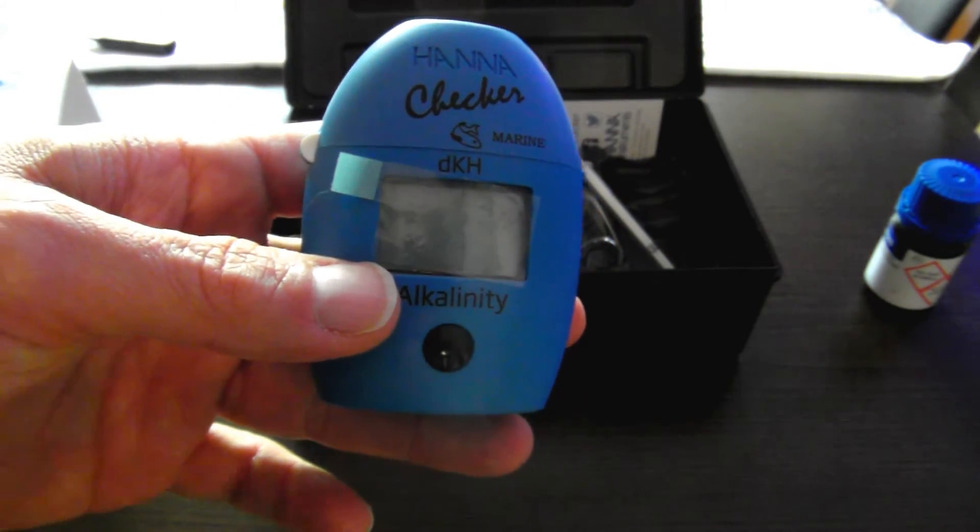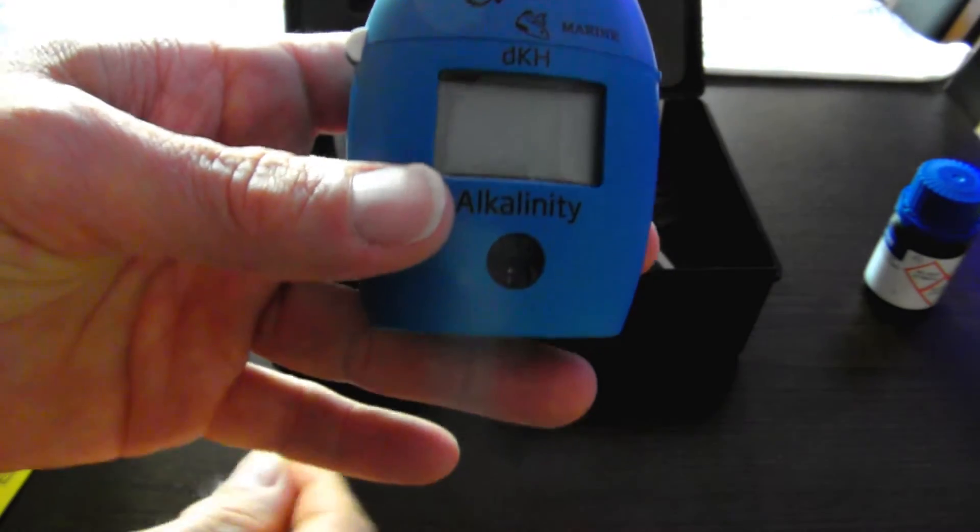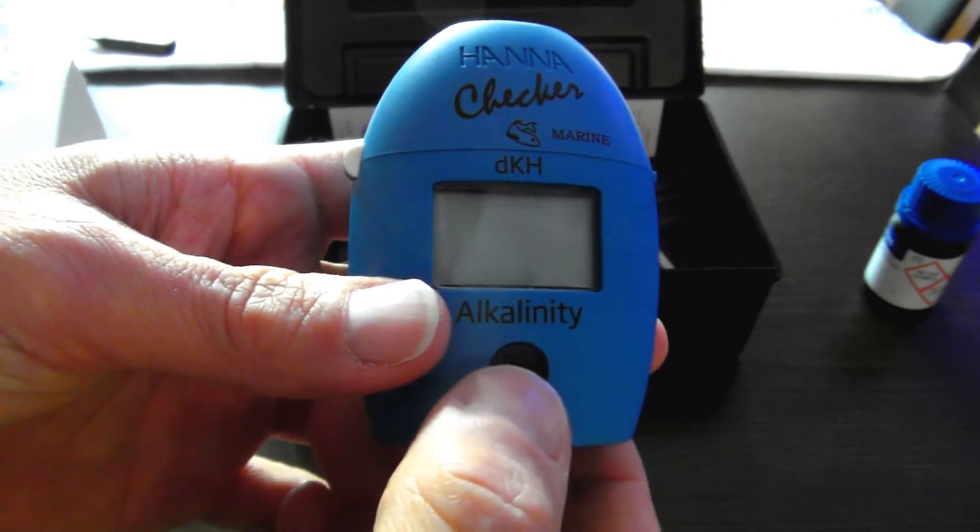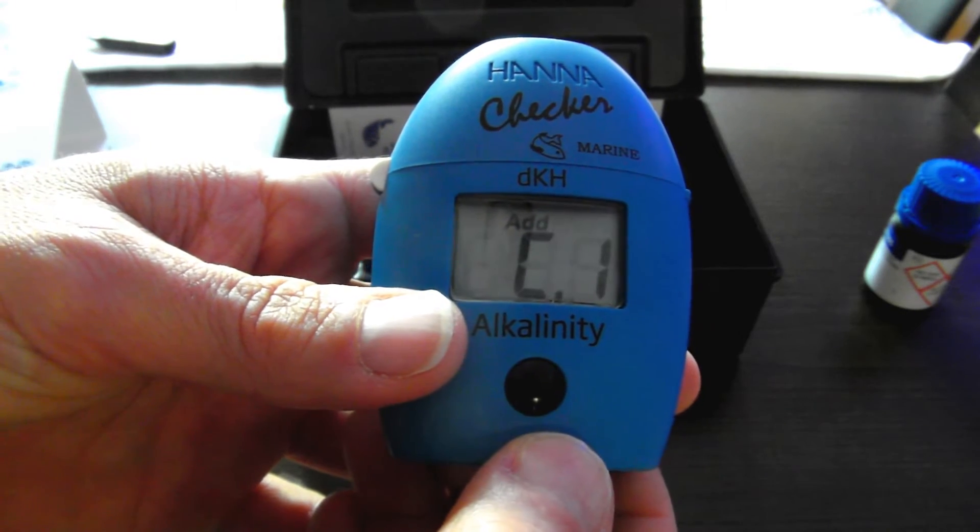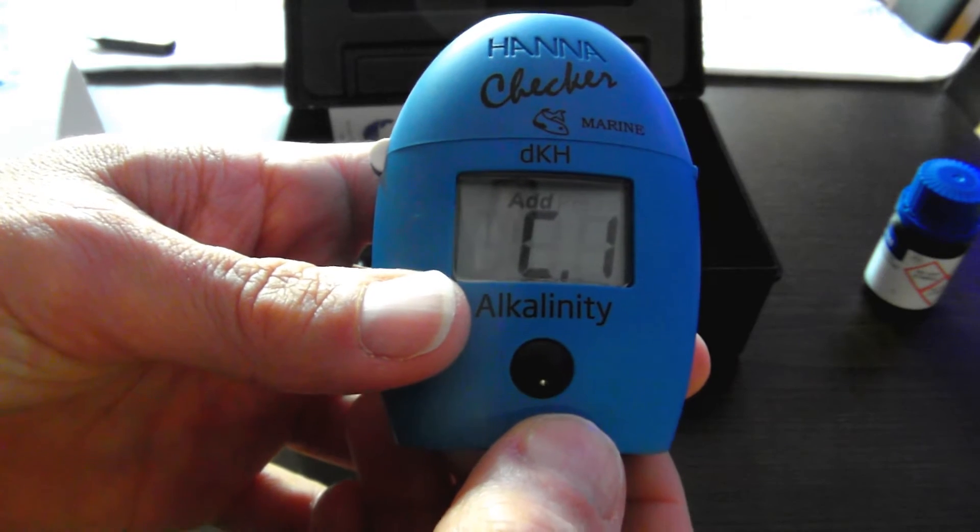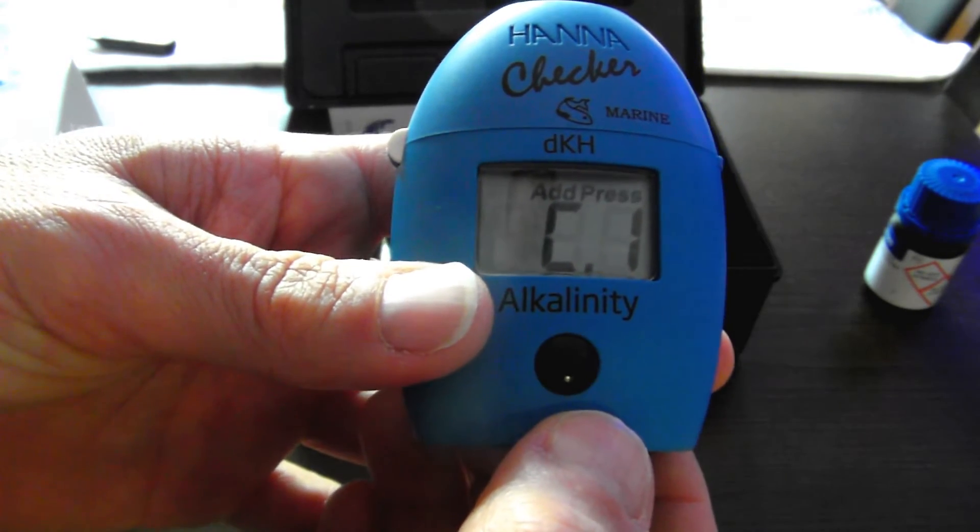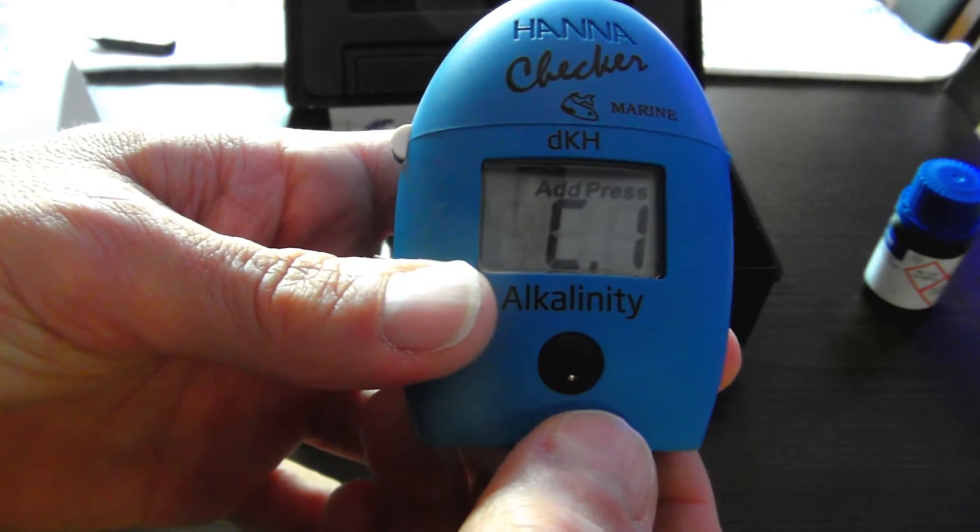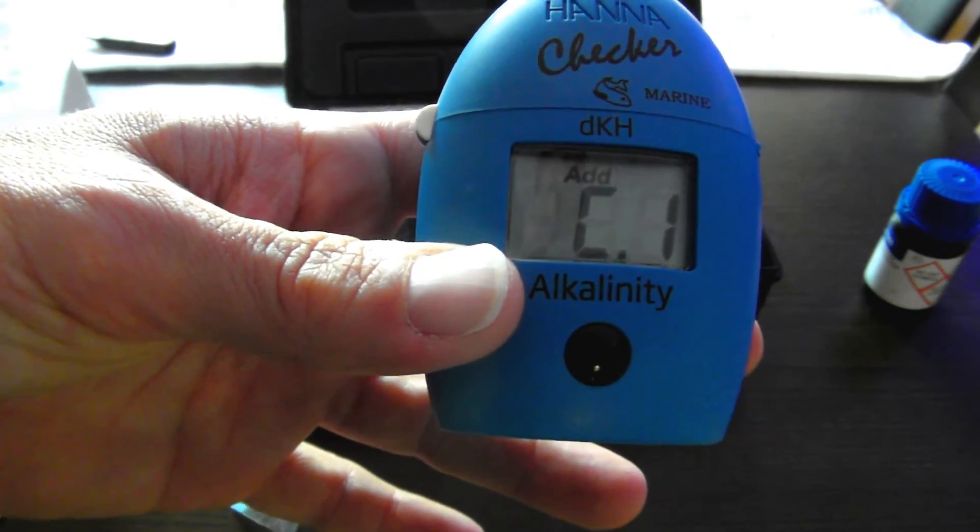Now with the battery installed, I'm going to remove the protective plastic off the LCD display and power the unit on by depressing the black button. All right, now the instructions say that when it displays C1, it's ready. So let's go ahead and prepare a sample and test it.